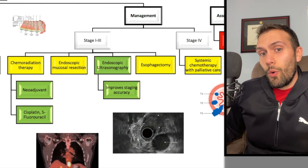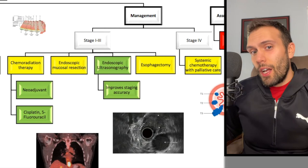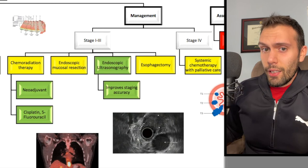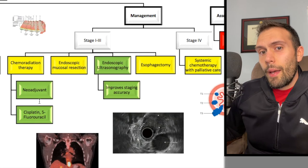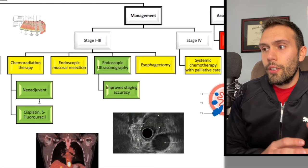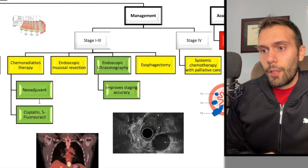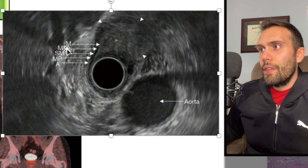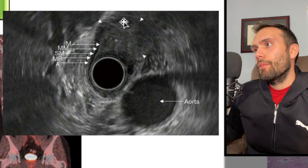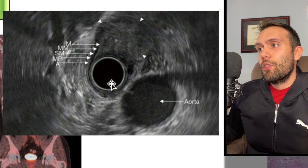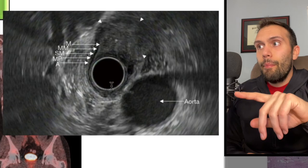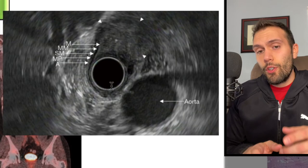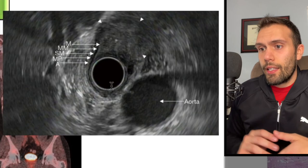There are also newer medications like Pembrolizumab (Keytruda) that target specific tumor markers like PDL1. Endoscopic ultrasonography (EUS) is used for biopsies and improves staging accuracy. EUS can visualize the submucosa, muscularis propria, and adventitia around the esophagus, and using fine needle aspiration you can biopsy masses — including transmural masses. EUS is the most sensitive test for determining tumor depth and degree of invasion, which correspond to the T score in TNM classification.